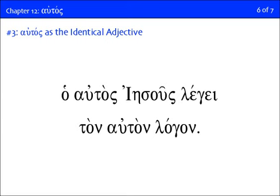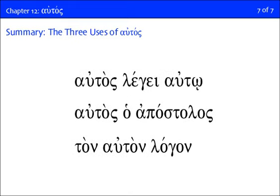The third use of autos is as what we call the identical adjective. This is when you translate autos with the word 'same.' When you see autos in an attributive position — immediately preceded by the article — it is functioning as the identical adjective. So ho autos Iēsous, with autos in the attributive position, is translated 'the same Jesus.' Similarly, ton auton logon means 'the same word.' So in summary: autos as a personal pronoun is the most common use; in a predicate position it can be the intensifier; in the attributive position it functions as the identical adjective.